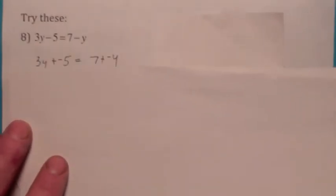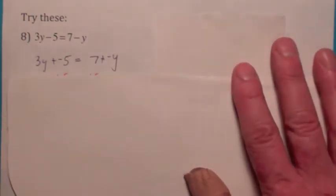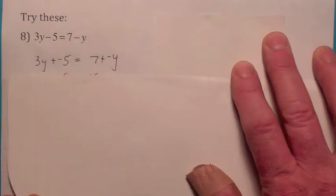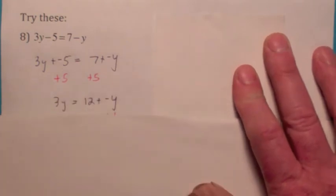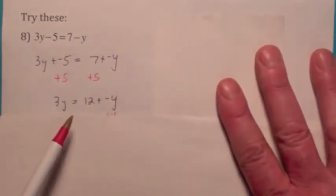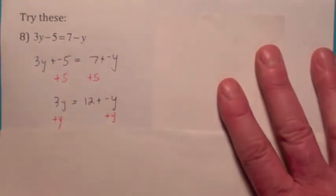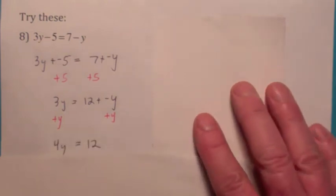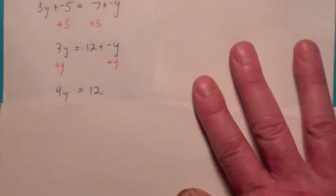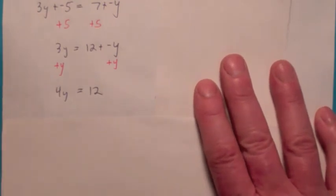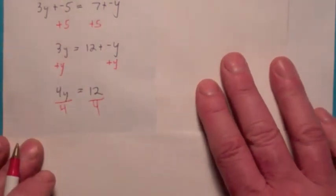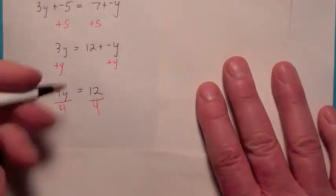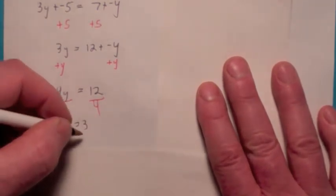On this first practice problem, let's change to additive form. The game plan: get the y's on one side, numbers on the other. Add positive 5 to both sides to move the negative 5 over. Then add positive y to both sides to get the y's together. You get 4y equals 12. Multiply by the reciprocal of 4, or divide by 4. You should have gotten y equals 3.